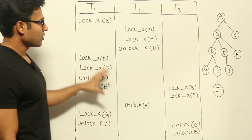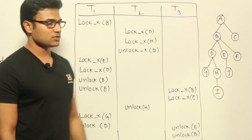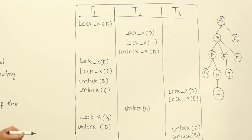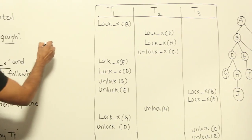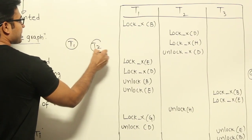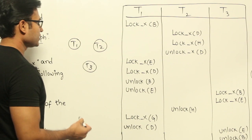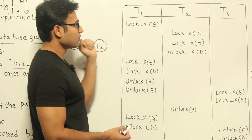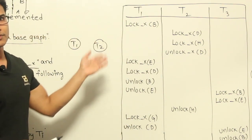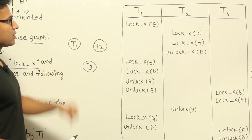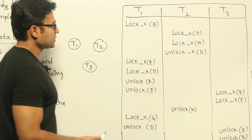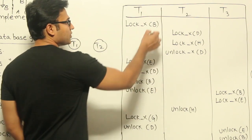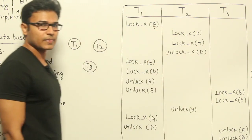If any schedule follows these rules, it will be conflict serializable. Let's draw the precedence graph to verify. We have T1, T2, and T3. Since all locks are exclusive, every exclusive lock conflicts with another transaction's exclusive lock on the same data item. Looking at B: there is a conflict between T1 and T3, so T1 → T3 in the precedence graph.